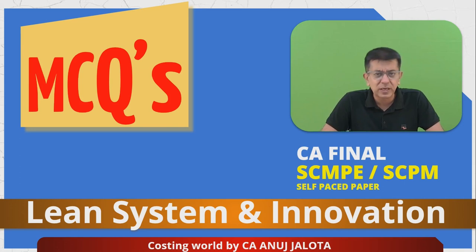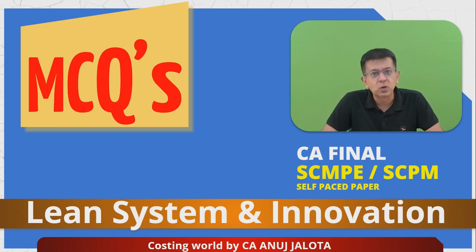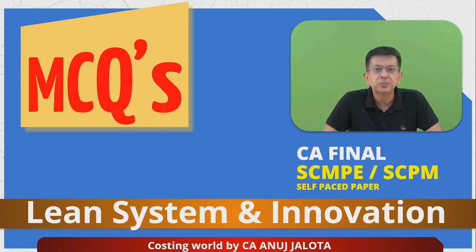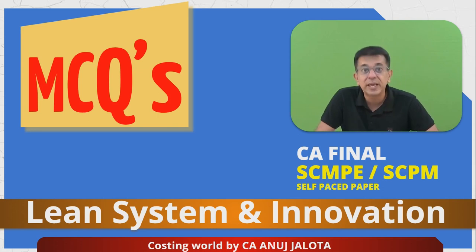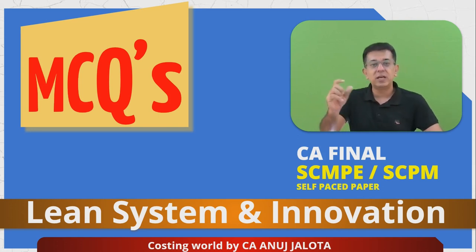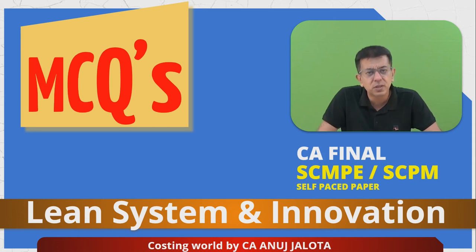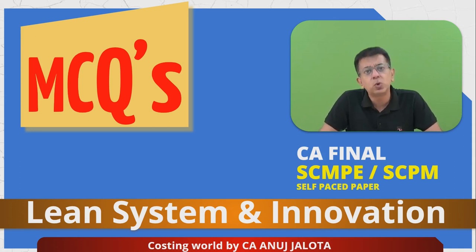OEE itself comprises three different ratios: availability, performance or efficiency, and quality. Individually, the availability ratio should be 90% or more, the efficiency or performance ratio should be 95% or more, and the quality ratio should be 99% or more. If you multiply 90, 95, and 99, that approximately comes to 85%.